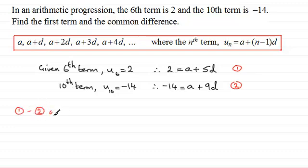Equation 1 minus equation 2, what does that give us? Well, we've got 2 minus -14, which is going to be 16, and that's going to equal, well, the 2 a's cancel, and then we've got 5d minus 9d, which is going to be -4d.